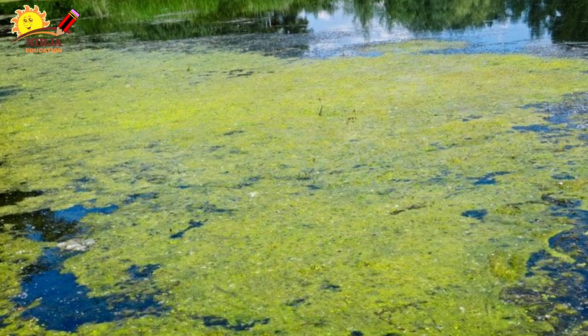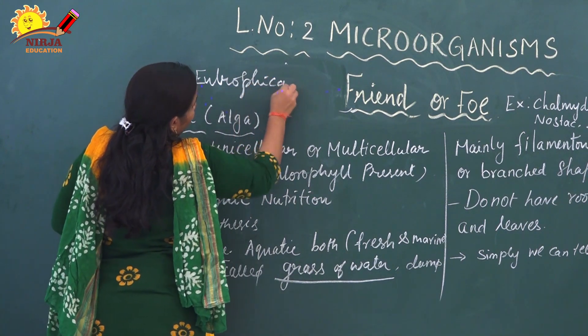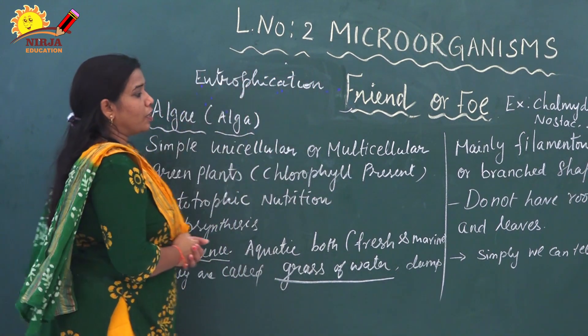Due to algal bloom, the growing algae cover the water surface, utilize the dissolved oxygen, and release more carbon dioxide. So the water becomes unfit for human beings as well as aquatic animals. The organisms do not get oxygen and will die. Due to that, the water produces a very bad smell. This process is called eutrophication, which means the water becomes unfit for drinking.